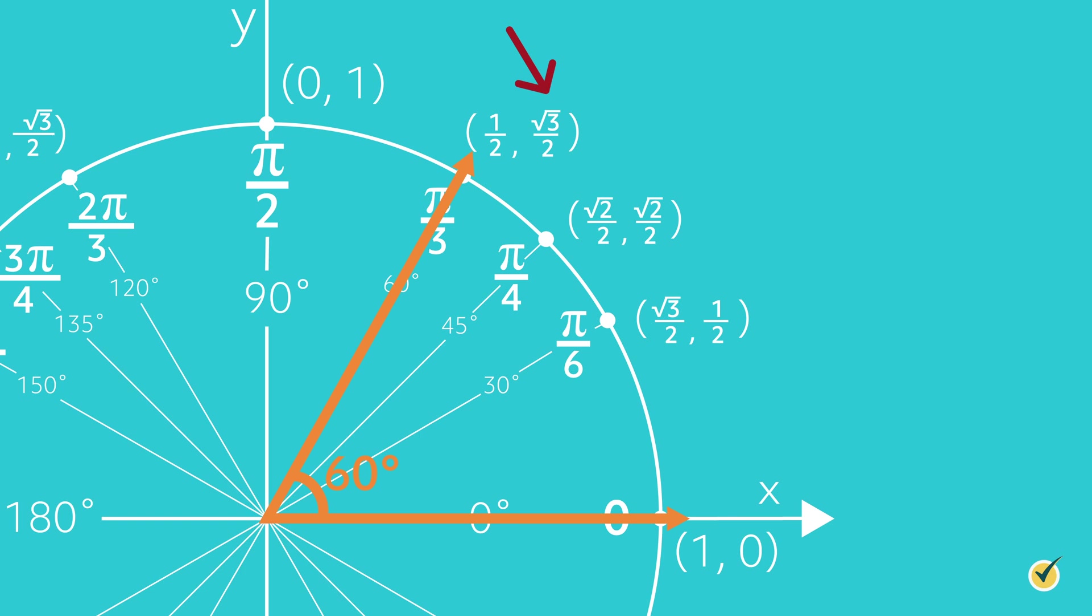The x coordinate gives us our cosine value for that angle and the y coordinate gives us our sine value. If you need to find the tangent value, simply put sine over cosine, or the y coordinate over the x coordinate.